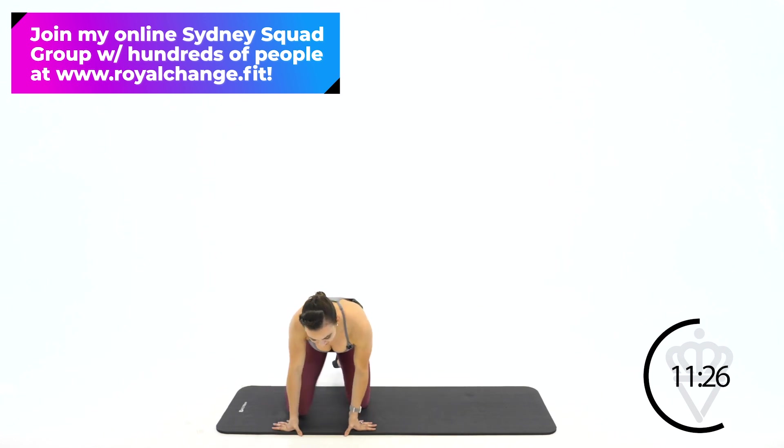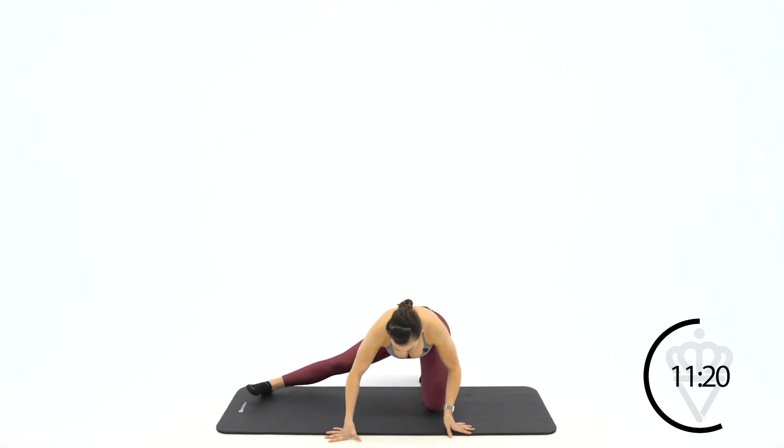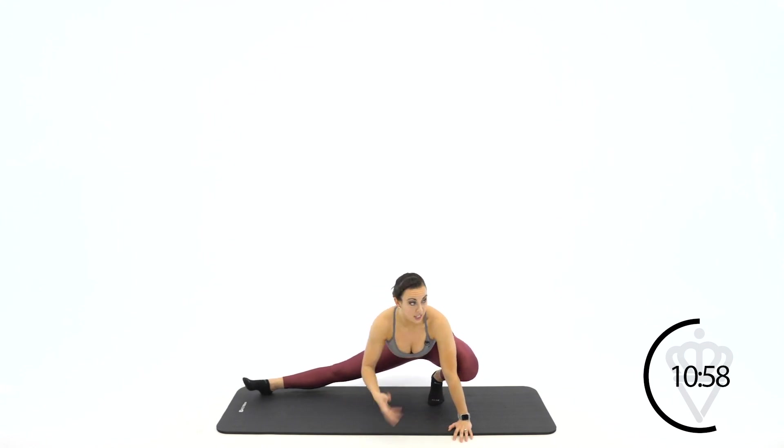Now let's make our way over to the other side. Same exact thing. So left leg is out straight, getting that inner thigh. Everyone gets super tight here with leg workouts, with glute workouts. So you can either be here on your toe or back down onto your knee. Continue to breathe.